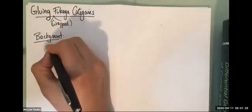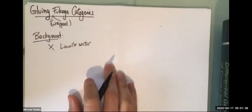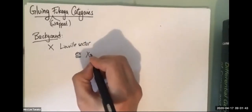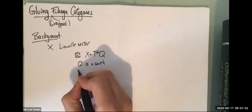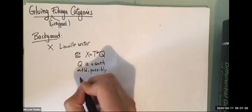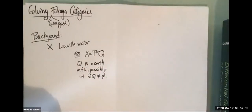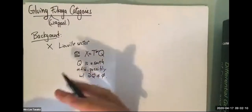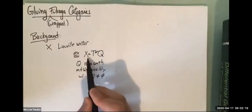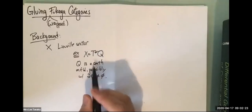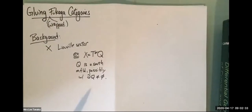Let's say that X is a Liouville sector. This is a notion that was introduced, as far as I know, by Ganatra, Pardon, and Shende. A classic example of a Liouville sector is when X is a cotangent bundle of Q, where Q is a smooth manifold, possibly with boundary. The boundary of Q may be non-empty — this is the big difference between a Liouville sector and a Liouville manifold. Note that this is non-compact; I'm not thinking of this as a Liouville domain, so there's no contact boundary at finite distance. The contact boundary is off at infinity.